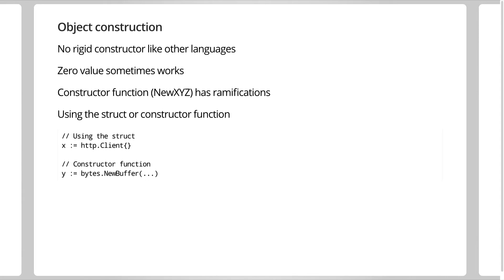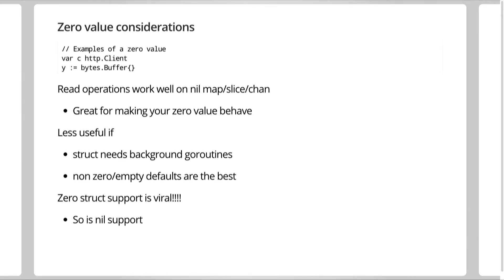Object creation is an interesting conundrum in Go because there's no rigid constructor. In Java you have a constructor function for struct initialization. In Go there's no concept of a constructor, so people jerry-rig things together with a function called new or new buffer. There are generally two ways to get your struct: using the struct directly, like x equals http.client, or getting it from a function. The zero value is in my opinion the most readable way to get an object.